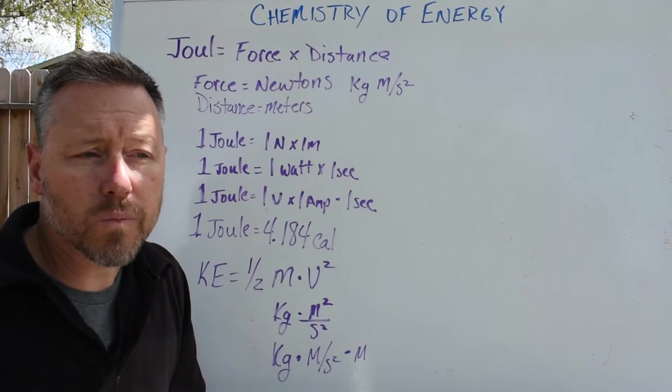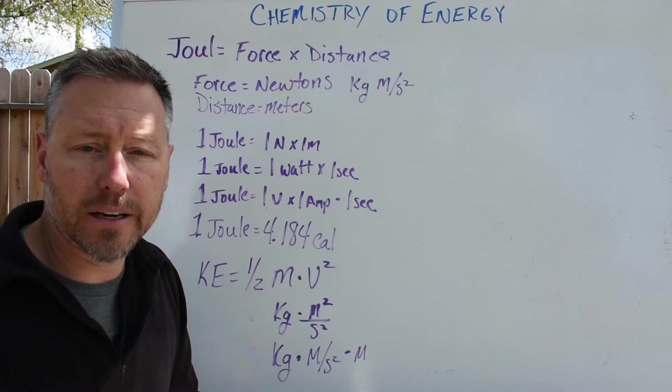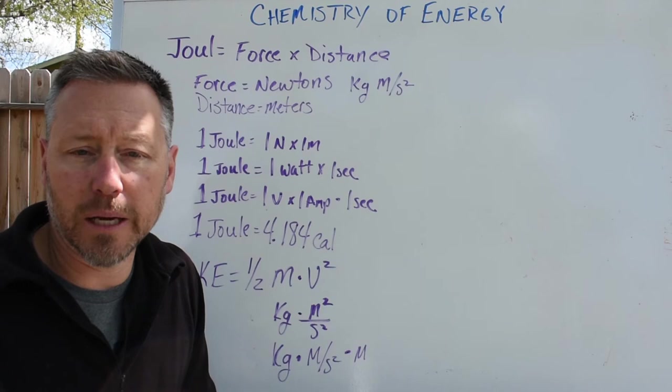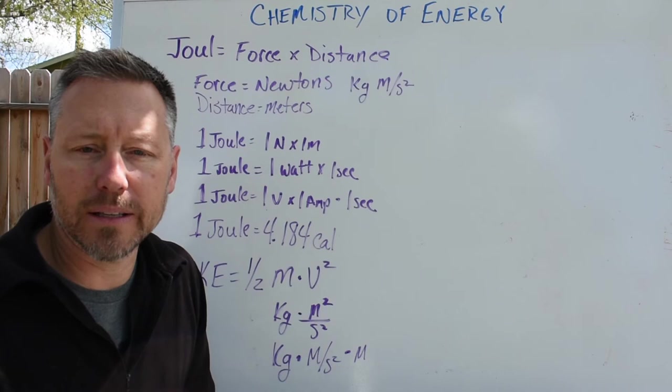Now what if all of that energy wasn't converted into necessarily kinetic energy but we converted into heat energy as well. So we have kinetic energy and we have heat energy and that's where chemistry starts to come in. And so there was a man by the name James Joule and that's exactly what he did.